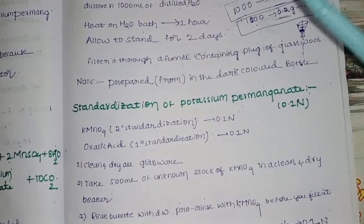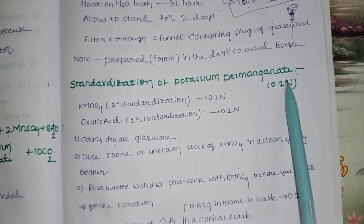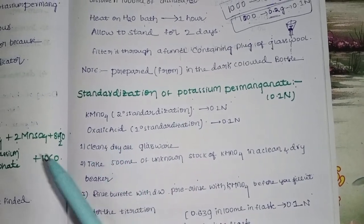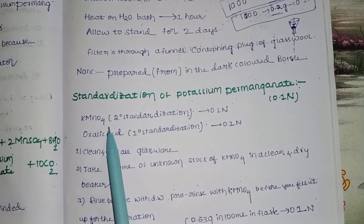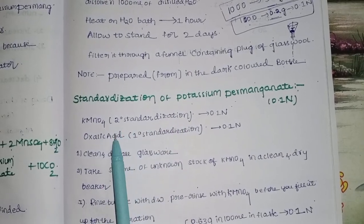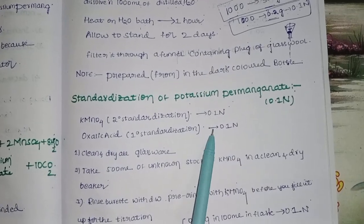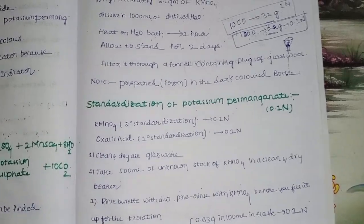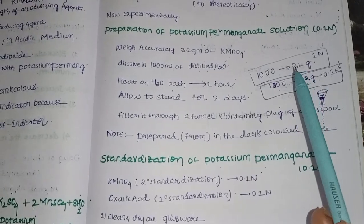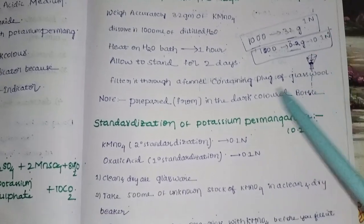Now we will do standardization of potassium permanganate. This is secondary standardization of KMnO4 at 0.1 normal. Since KMnO4 is a secondary standard, we will titrate it against oxalic acid, which is the primary standard.